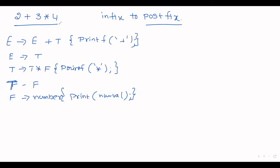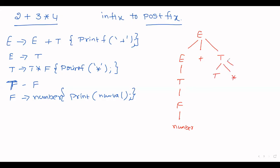The procedure is: for the input string, construct the parse tree and then traverse top to down and left to right for execution. Starting from E, E is expanded to E plus T. To get the left part, E tends to T, T tends to F, F tends to the corresponding number — it produces 2. Similarly, T tends to T star F; T tends to F, F tends to the corresponding number — it produces 3. Then F tends to the number 4.